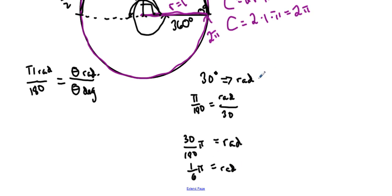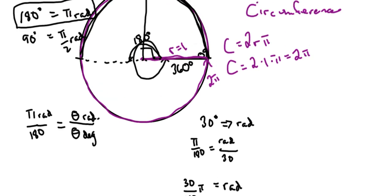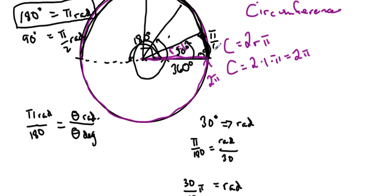We can simplify that — 30 over 180 simplifies to 1 over 6 — so our answer is pi over 6 radians. So 30 degrees is equal to pi over 6 radians. That totally makes sense because 30 degrees on a unit circle — from here to here — this arc length is going to be 1 sixth of pi. That's the length of the unit circle arc, and that's how we find our radians.